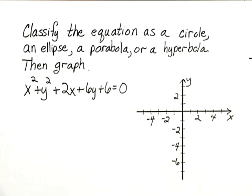Classify the equation as a circle, an ellipse, a parabola, or a hyperbola, then graph. We have the equation x squared plus y squared plus 2x plus 6y plus 6 equals 0.